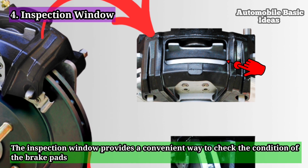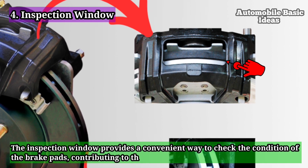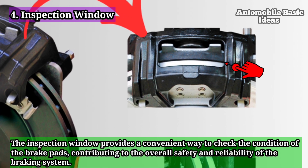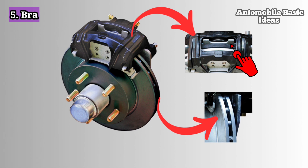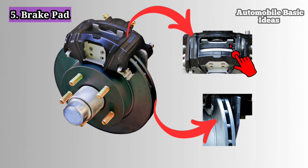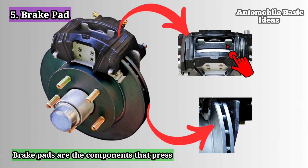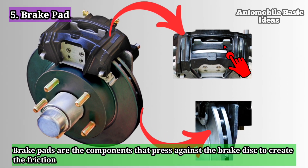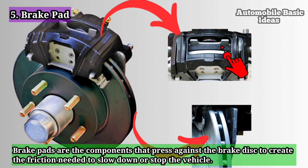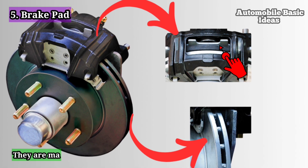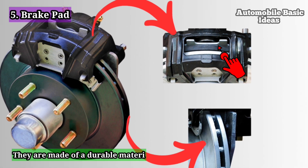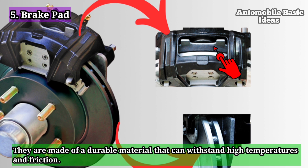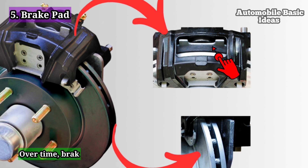The inspection window provides a convenient way to check the condition of the brake pads, contributing to the overall safety and reliability of the braking system. Five: brake pad. Brake pads are the components that press against the brake disc to create the friction needed to slow down or stop the vehicle. They are made of a durable material that can withstand high temperatures and friction.